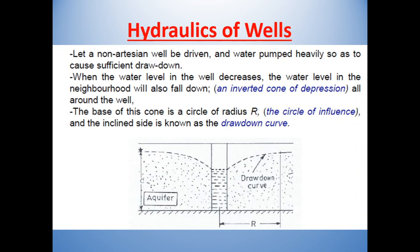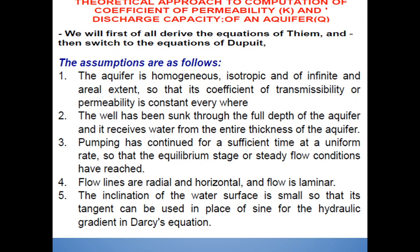For the hydraulics of the well, let a non-artesian well be driven and water pumped heavily so as to cause sufficient drawdown. When the water level in the well decreases, the water level in the neighborhood will also fall, forming an inverted cone of depression all around the well. The base of this cone is a circle of radius R — the circle of influence — and the inclined side is known as the drawdown curve. We will first derive the equation of Thiem and then switch to the equation of Dupuit.